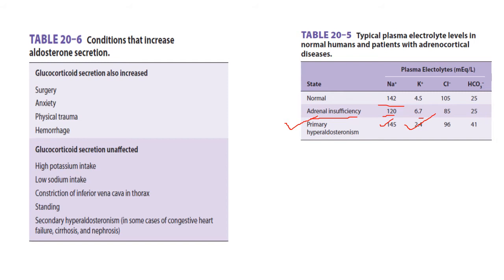In Bartter syndrome, secondary hyperaldosteronism is present — due to a defect in the barttin protein affecting sodium-potassium-2-chloride reabsorption in the ascending loop of Henle — but edema is absent. Summary: primary hyperaldosteronism — renin decreased, no edema, caused by Conn's syndrome (adrenal adenoma); secondary hyperaldosteronism — renin increased, edema present; Bartter syndrome — secondary hyperaldosteronism but no edema.